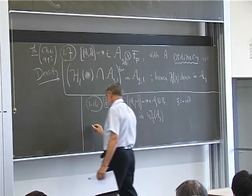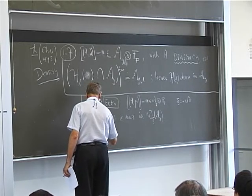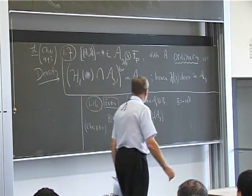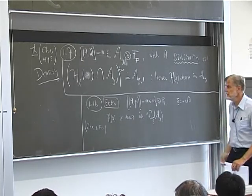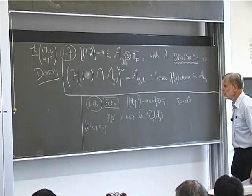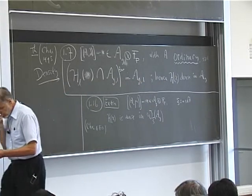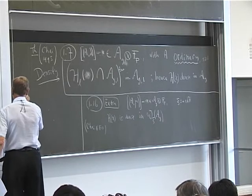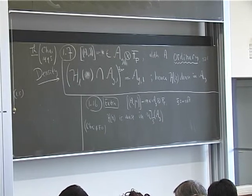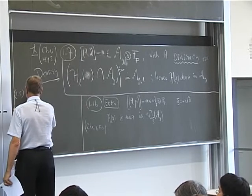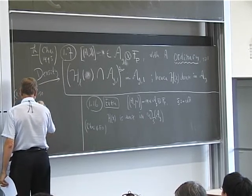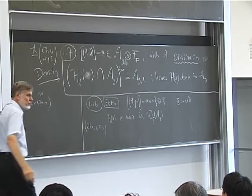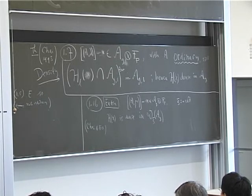Ching-Li Chai proved this theorem in Inventiones 1995 — a beautiful theorem — and on Friday Ching-Li will finally prove this theorem, but the proof is different from the 1995 Inventiones paper. We were working on this and thought: why do we take ordinary abelian varieties? Is it really necessary? Note: for an elliptic curve that is supersingular — which by definition is the same as not ordinary — it has no physical points of exact order p, it has no mu_p in it, and the Frobenius kernel is isomorphic to alpha_p.